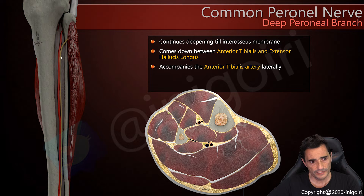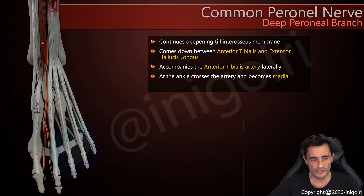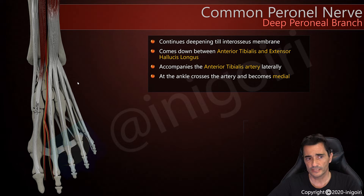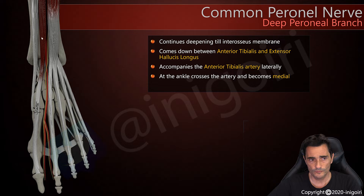The deep peroneal nerve accompanies the anterior tibial artery along the entire lower leg, closely stuck to the interosseous membrane, until it reaches the ankle. At the ankle it is located between the extensor digitorum longus and the extensor hallucis longus tendons. This is very important: if we want to perform ultrasound-guided procedures at the ankle joint, like intra-articular injections, we must avoid this location between these two tendons and go more medially.